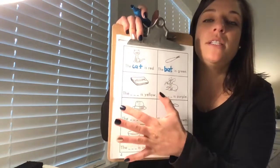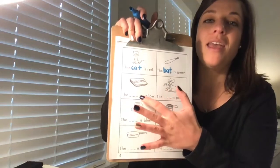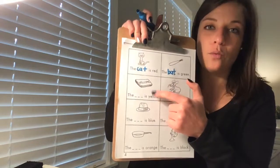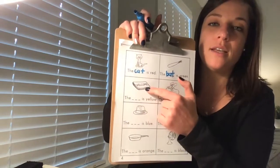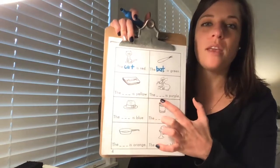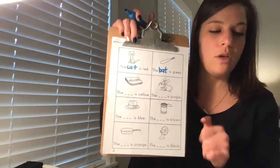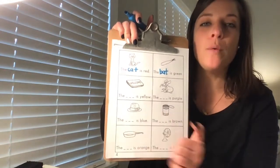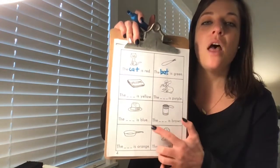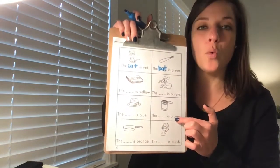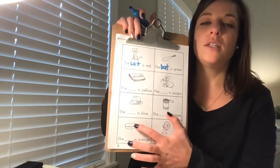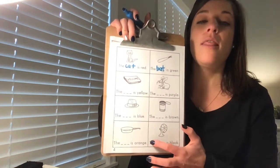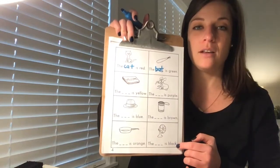The next one says the mm, you're going to fill in that word, is yellow. The mm is yellow. So what color are you going to color this? Yellow. This is the mm is purple, okay? This one says the mm is blue. This one says the mm is blue. The mm is brown. The next one says the mm is orange. And the last one, the mm is black, okay?